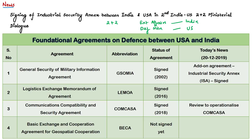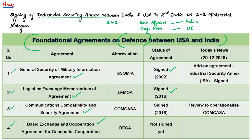The important news from this article is that India and United States have signed the Industrial Security Annex (ISA). The United States enters into four foundational agreements with its defense partners. India is a defense partner, recognized as a major defense partner by the United States in 2016. The four foundational agreements are: the General Security of Military Information Agreement (GSOMIA), the Logistics Exchange Memorandum of Agreement (LEMOA), the Communications Compatibility and Security Agreement (ComCASA), and the Basic Exchange and Cooperation Agreement for Geospatial Cooperation (BECA). GSOMIA was signed in 2002, LEMOA in 2016, and ComCASA was signed in 2018 during the first 2+2 dialogue in New Delhi.